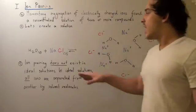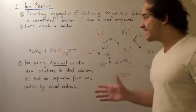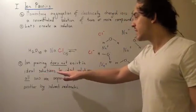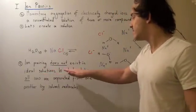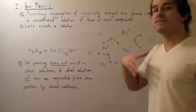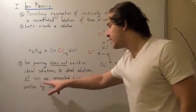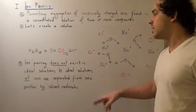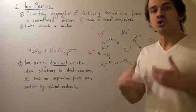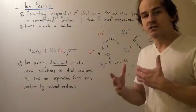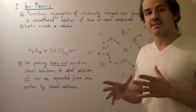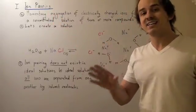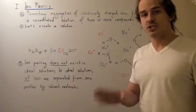Ion pairing does not exist in an ideal solution. That's because in an ideal solution, by definition, all the ions are separated from one another by solvent molecules, so no attraction between two ions exists. Ion pairing only exists in non-ideal conditions.